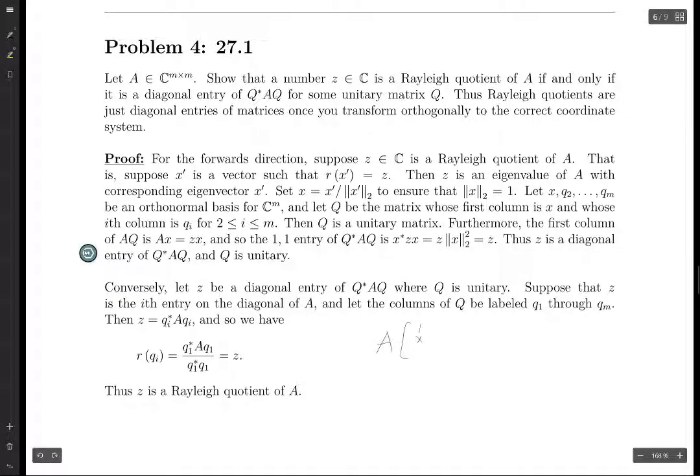So if we imagine this as A times X times Q1, or this would be Q2, and then all the way to QM. So this whole thing here is capital Q, and I've just written it as each of these things is like one of the columns. Then if you imagine what happens when you do this matrix multiplication, we end up with AX, and then AQ2, all the way to AQM.